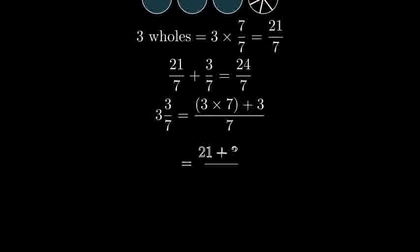Here's the general method. First, multiply the whole number by the denominator. That's 3 times 7, which is 21.